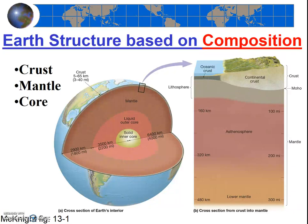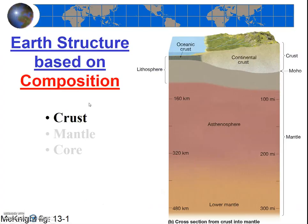You should memorize these three terms, and also memorize what they are made out of. First, we'll begin with the crust, the outer layer. The crust is the outer layer, and obviously the earth's crust is made out of many different rocks—otherwise, rock identification in geology lab would be pretty easy, right?